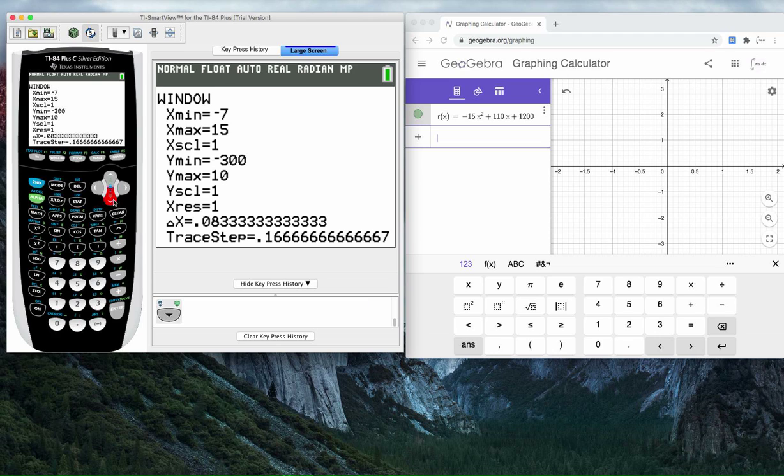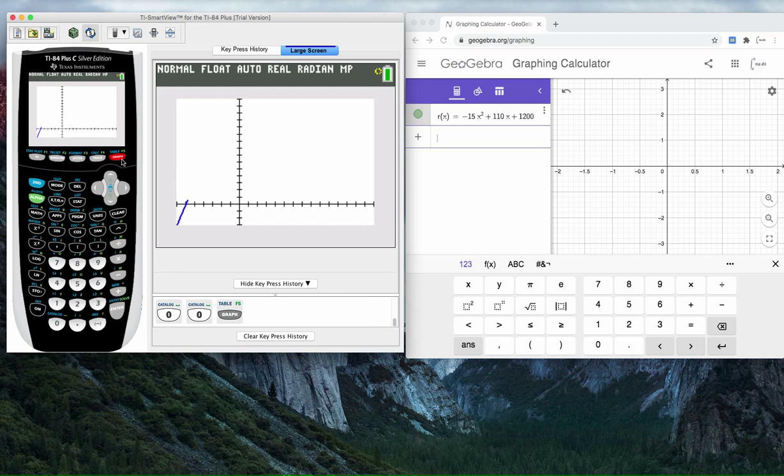Actually, I'm going to change it. Let's go to negative 300 so it matches more to our handout. And let's go all the way up to 1500. I'm going to use increments of 100 here. I might even go 200. For now, this works.